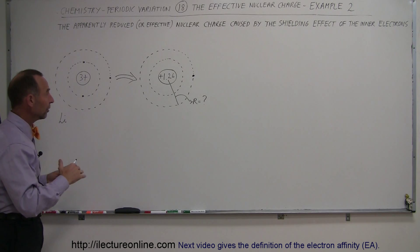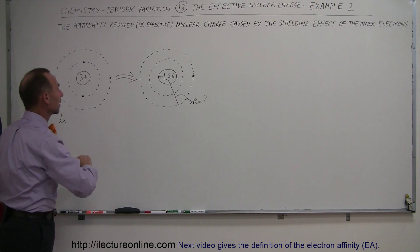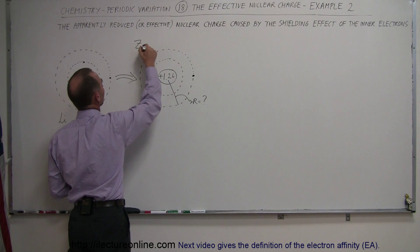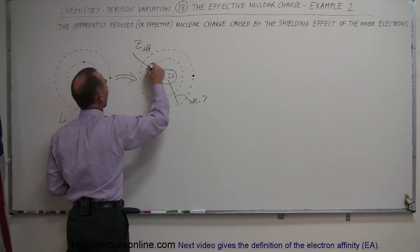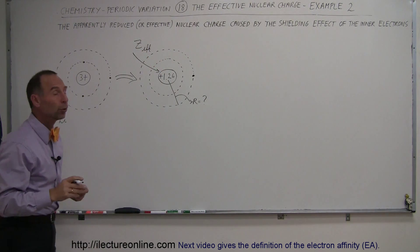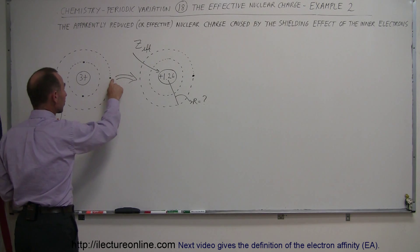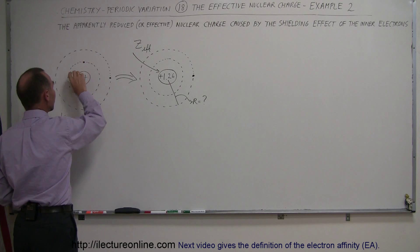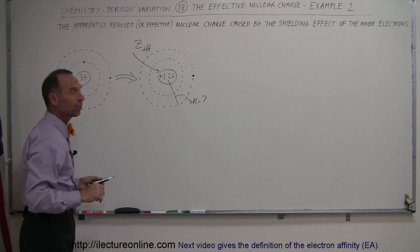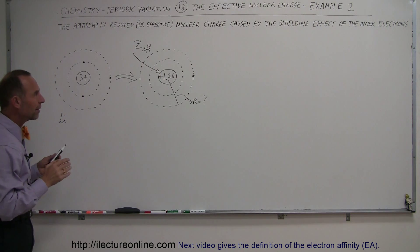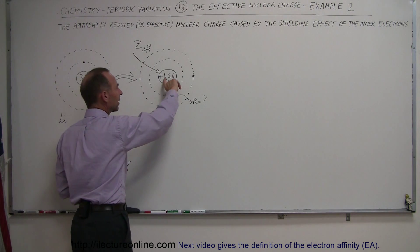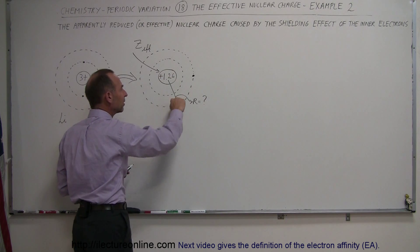Now we have learned that the effective Z, Z-effective, of a lithium atom is only 1.26 positive charges at the nucleus. In other words, this outer electron is affected by the nucleus as if there's only 1.26 positive charges there instead of three positive charges.